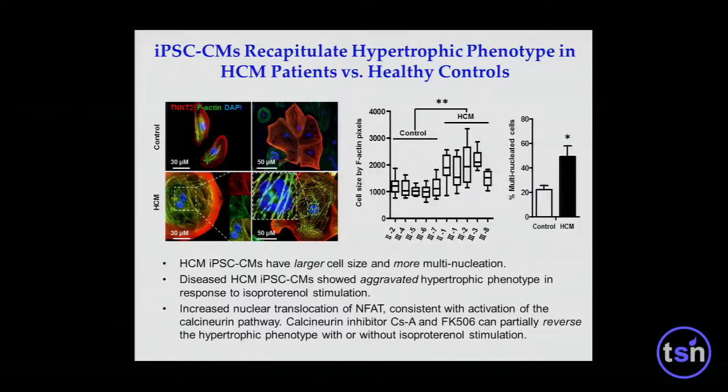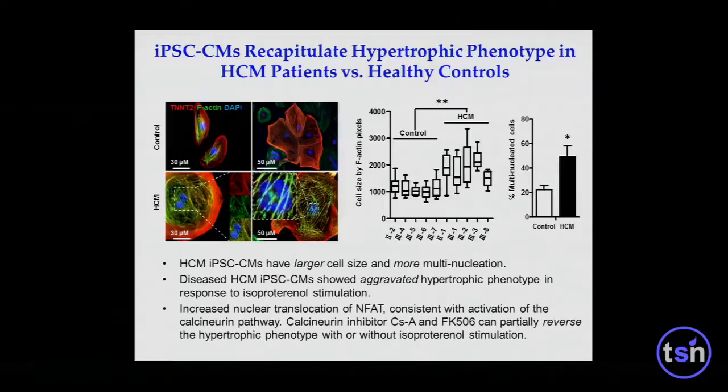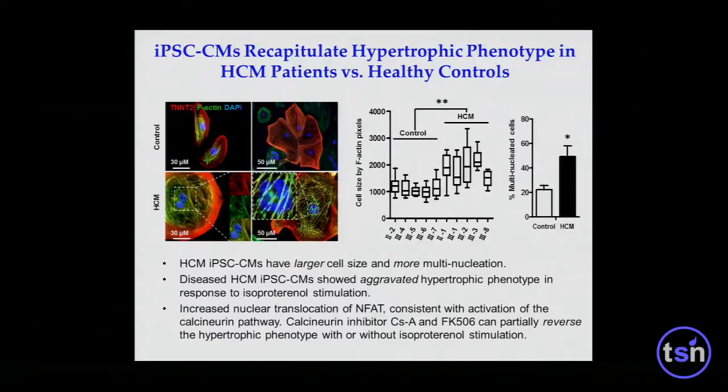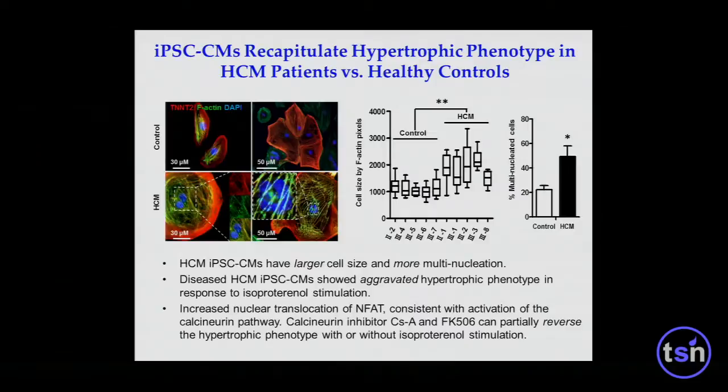We did this about three to four years ago. The hypertrophic kids' iPSC-cardiomyocytes have larger cell size compared to normal kids — they're also more multinucleated. You can aggravate the hypertrophy by giving isoproteinol stress. We also showed increased nuclear translocation of NFAT, consistent with activation of the calcineurin pathway, and we can block this by cyclosporin and FK506.